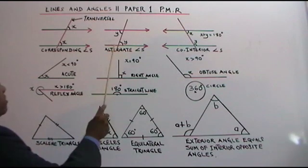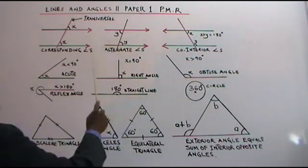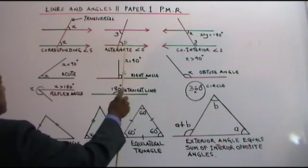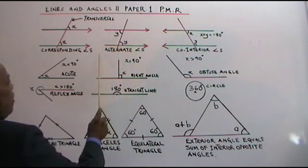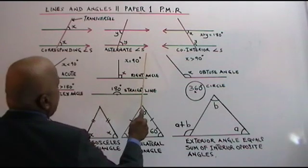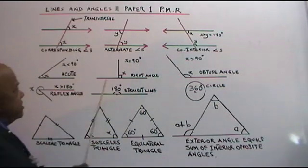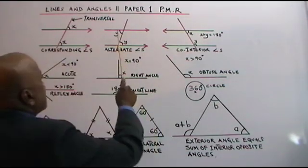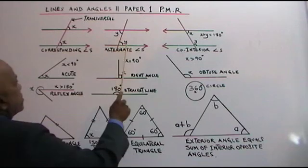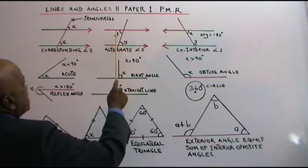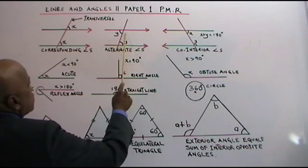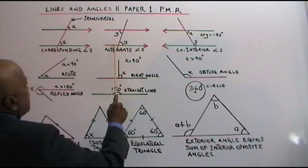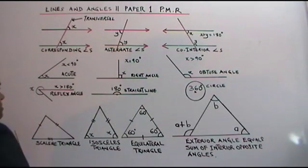Now look at the second diagram. These two angles are known as alternate angles. These two angles are equal, and these two are also equal. Alternate angles.